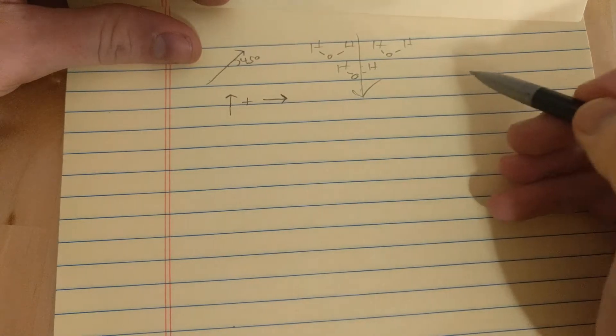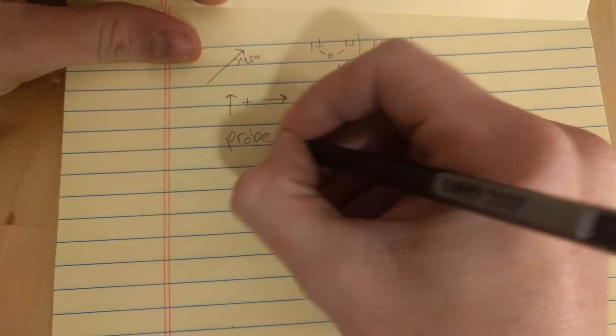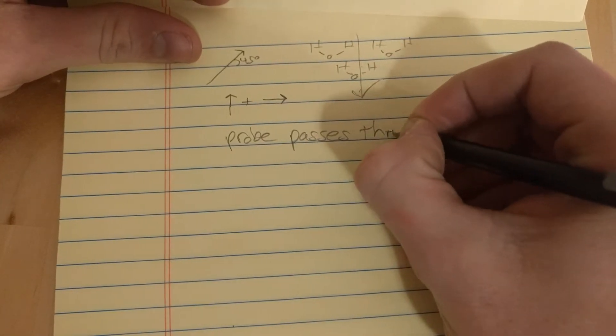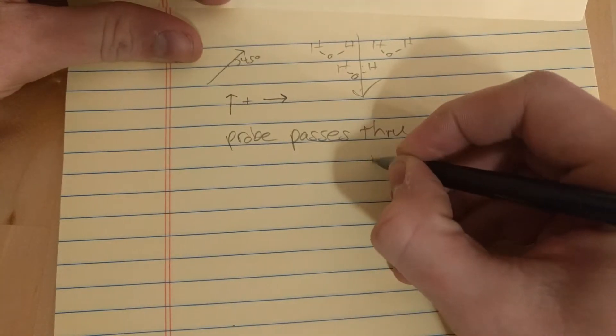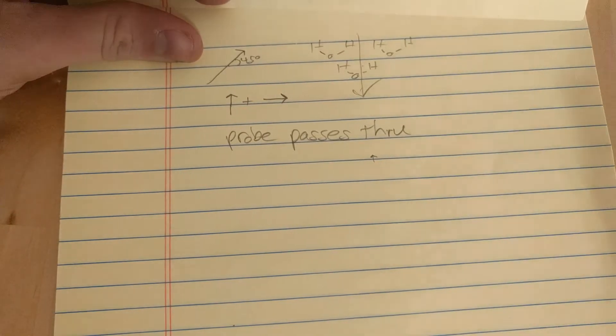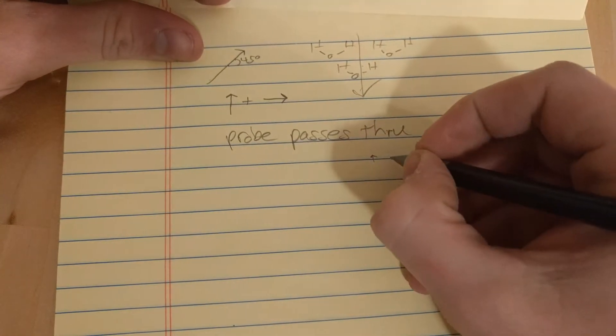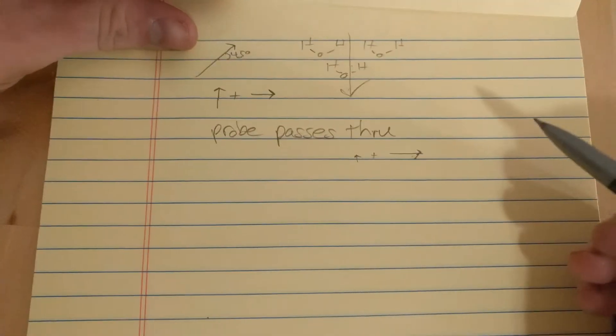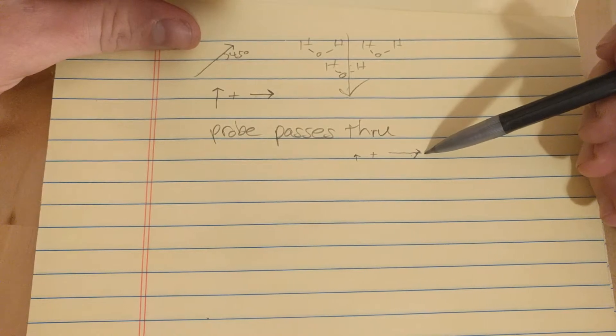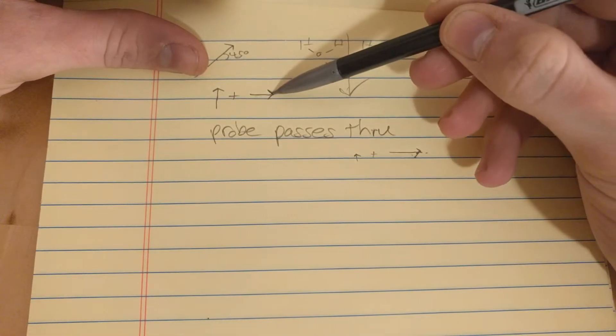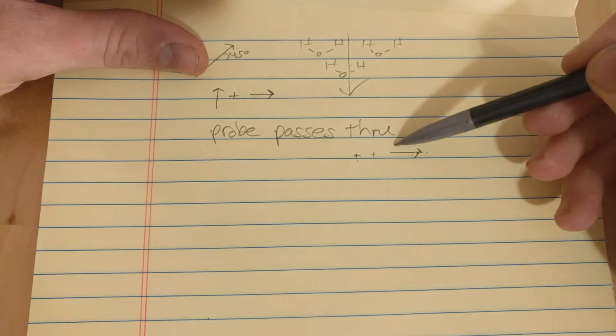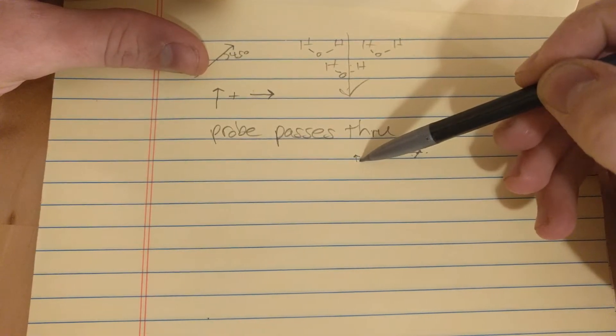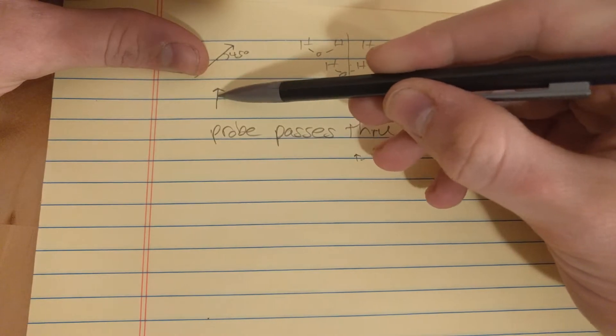So, after the probe passes through, probe passes through the sample, it's going to look like this. It's going to have a small vertical arrow. Might even switch the direction of the vertical arrow. But, the horizontal arrow is going to be left untouched. The horizontal component. So, this vector here has the same magnitude as this vector, whereas this vector is much smaller than the magnitude of this vector here.